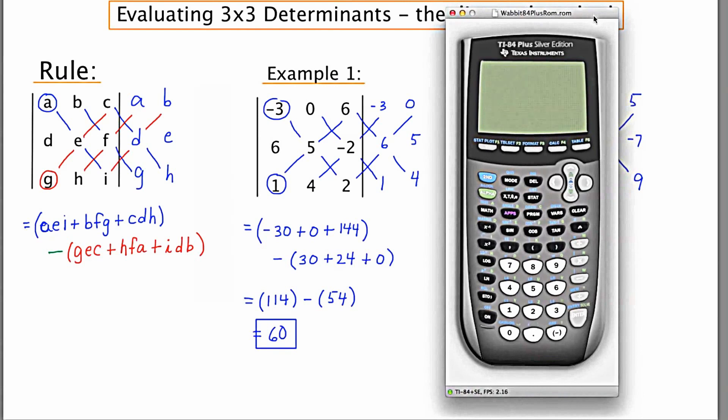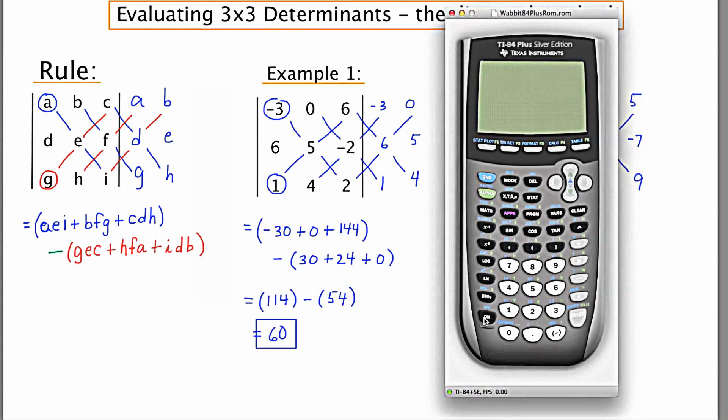So I'm going to do example one. I'll turn the calculator on. We'll go to our matrix menu, which is going to be pressing the second. And then I believe it's three buttons below that. It's matrix is written above the button and we want to edit matrix A. So I'm going to go over to the right.